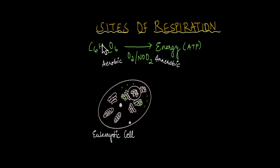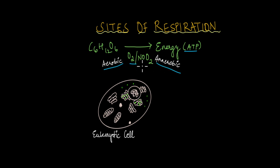In previous videos you learnt about the two mechanisms of cellular respiration. One is aerobic respiration, in which glucose is converted to energy or ATP in the presence of oxygen. The other is anaerobic respiration, in which glucose is used to produce energy in the absence of oxygen. In this video we are going to see where exactly in the cell these processes take place.